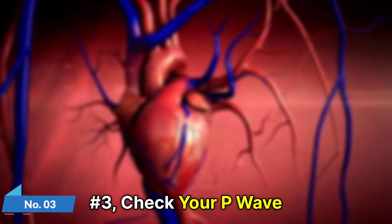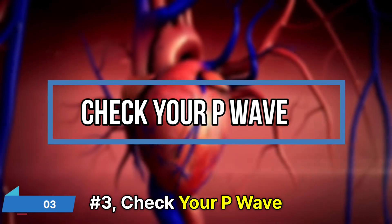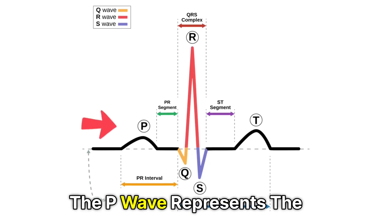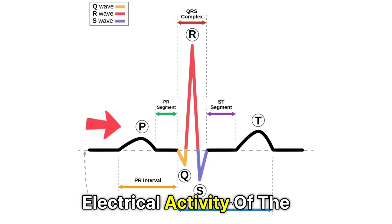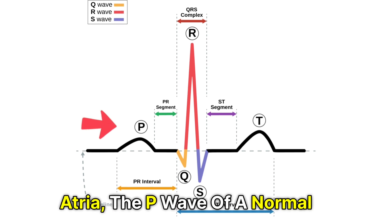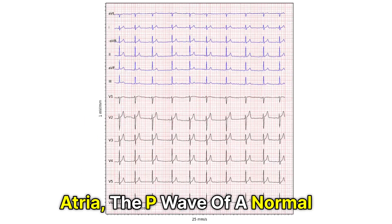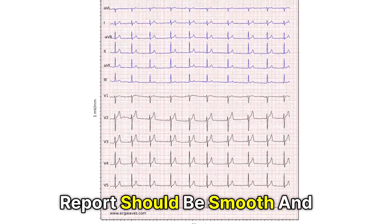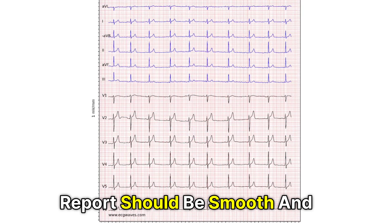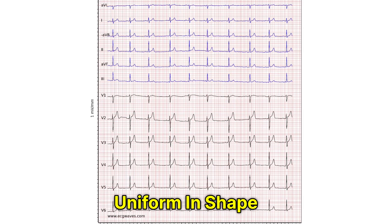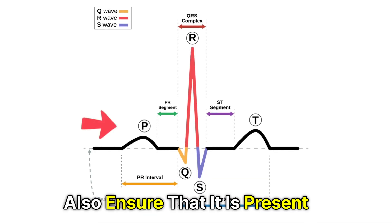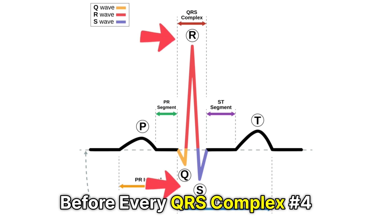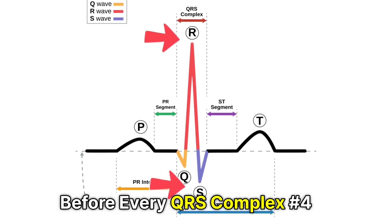Number 3: Check your P wave. The P wave represents the electrical activity of the atria. The P wave of a normal ECG report should be smooth and uniform in shape. Also, ensure that it is present before every QRS complex.